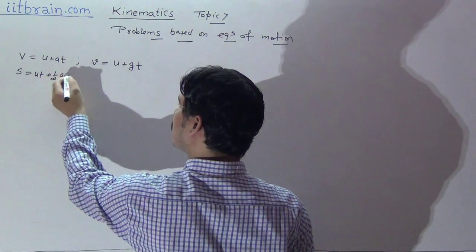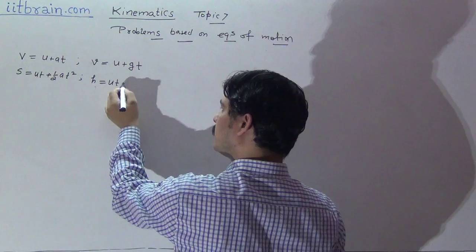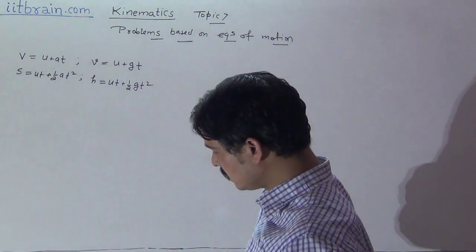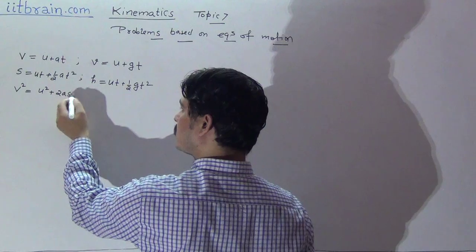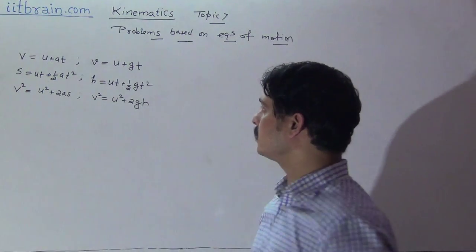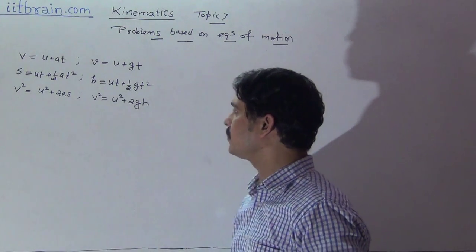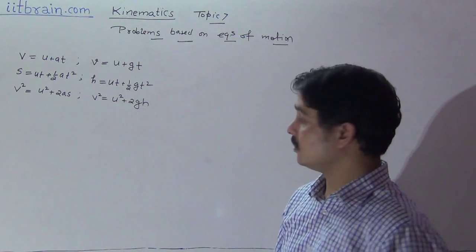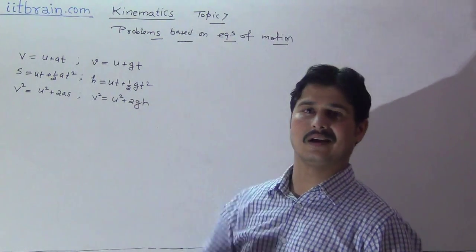The second equation is s equal to ut plus half at squared, and its vertical gravity equivalent is h equal to ut plus half gt squared. The third equation is v squared equal to u squared plus 2as, and its vertical equivalent is v squared equal to u squared plus 2gh. These are the equations for linear horizontal motion and for vertical motion under gravity.